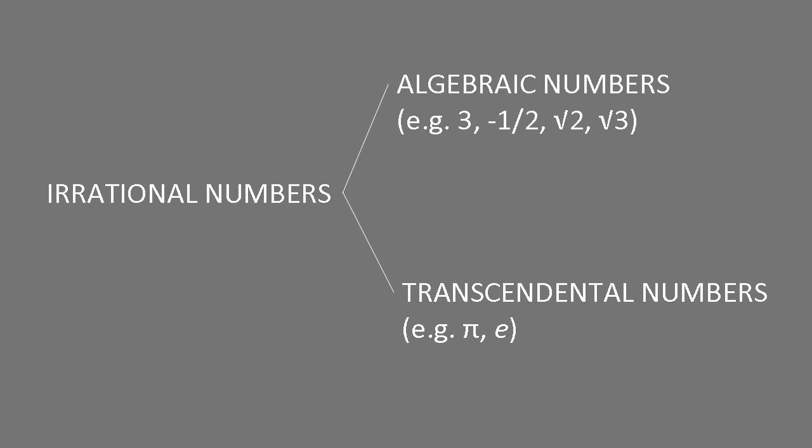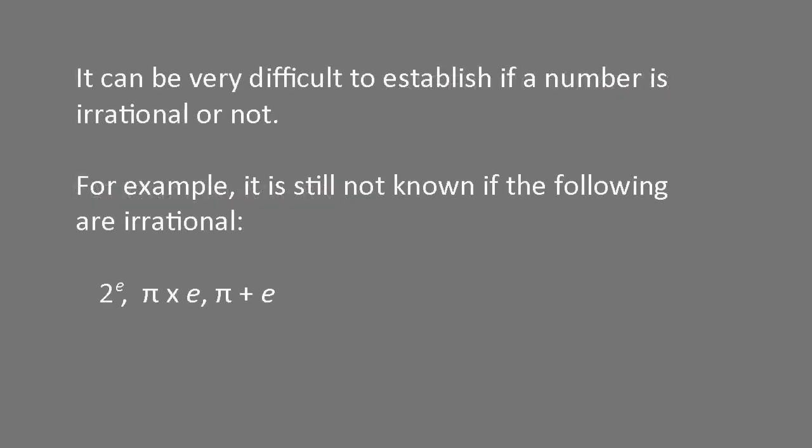In some cases, it isn't known if a number is irrational or not. Undecided cases include two to the power e, pi times e, pi plus e, and the Euler-Mascheroni constant gamma.